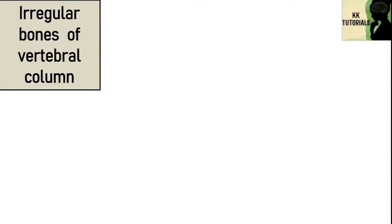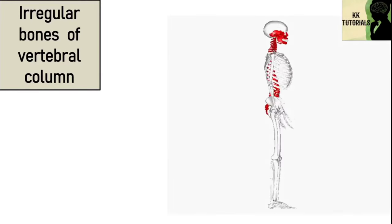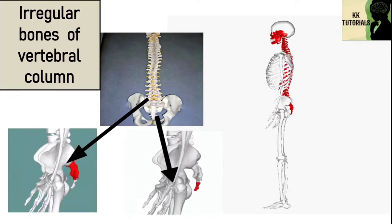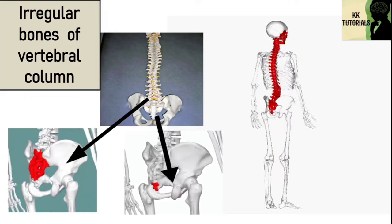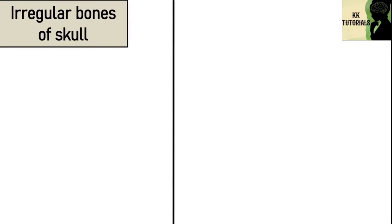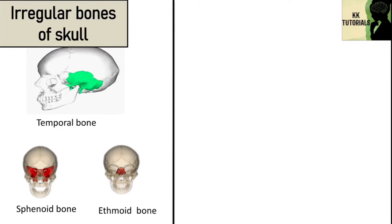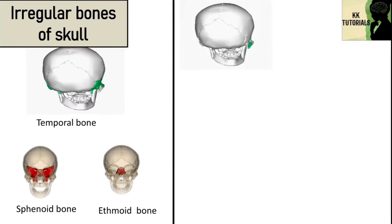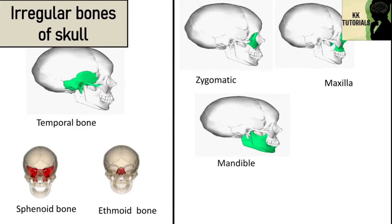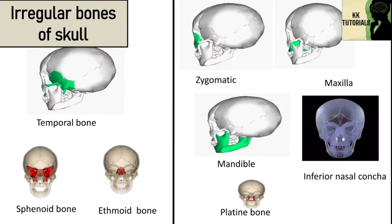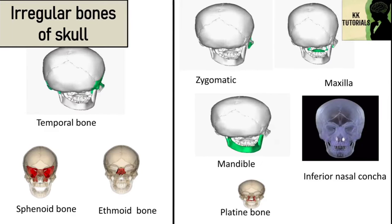The fourth type is irregular bones. Bones of the vertebral column and some skull bones are irregular in shape and are classified as irregular bones. All bones of the vertebral column are irregular in shape. The sacrum and coccyx, which is referred to as the tailbone, are also irregular bones. Irregular bones of the skull include the temporal bone, sphenoid bone and ethmoid bone, which are part of the cranial bones. The zygomatic, maxilla, mandible, inferior nasal concha and palatine bones, which are part of the facial bones, are also included in the irregular bone type.